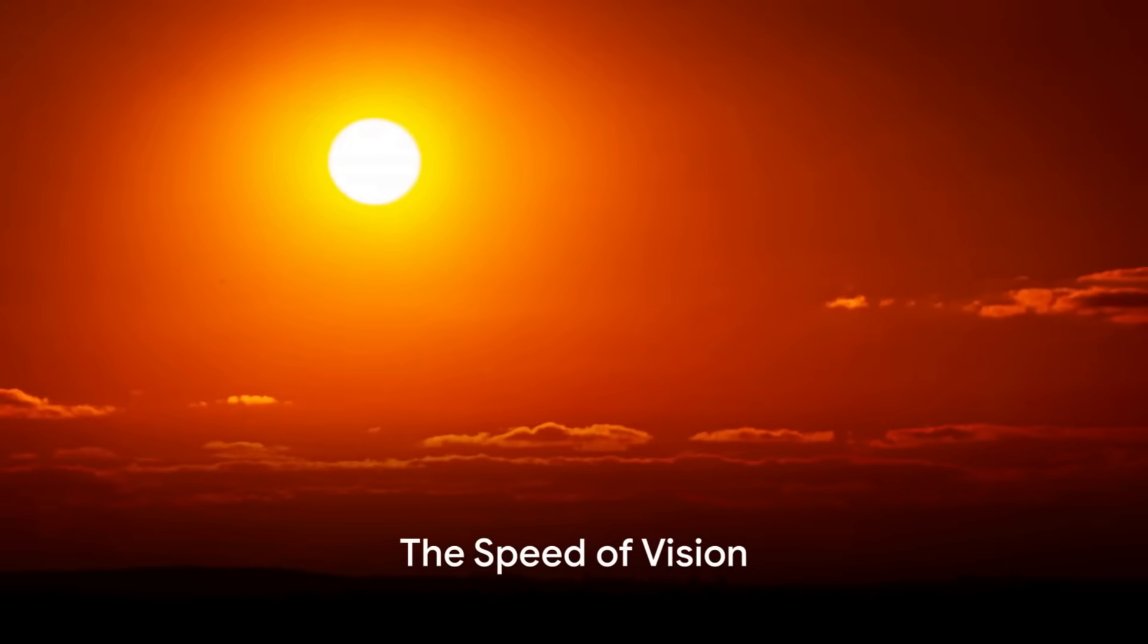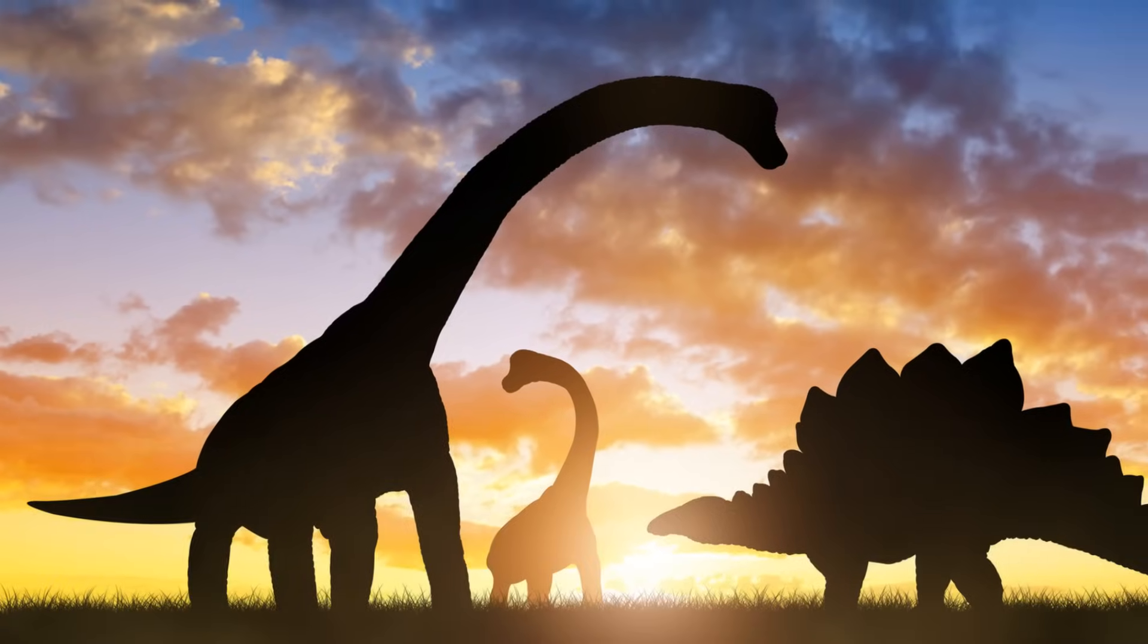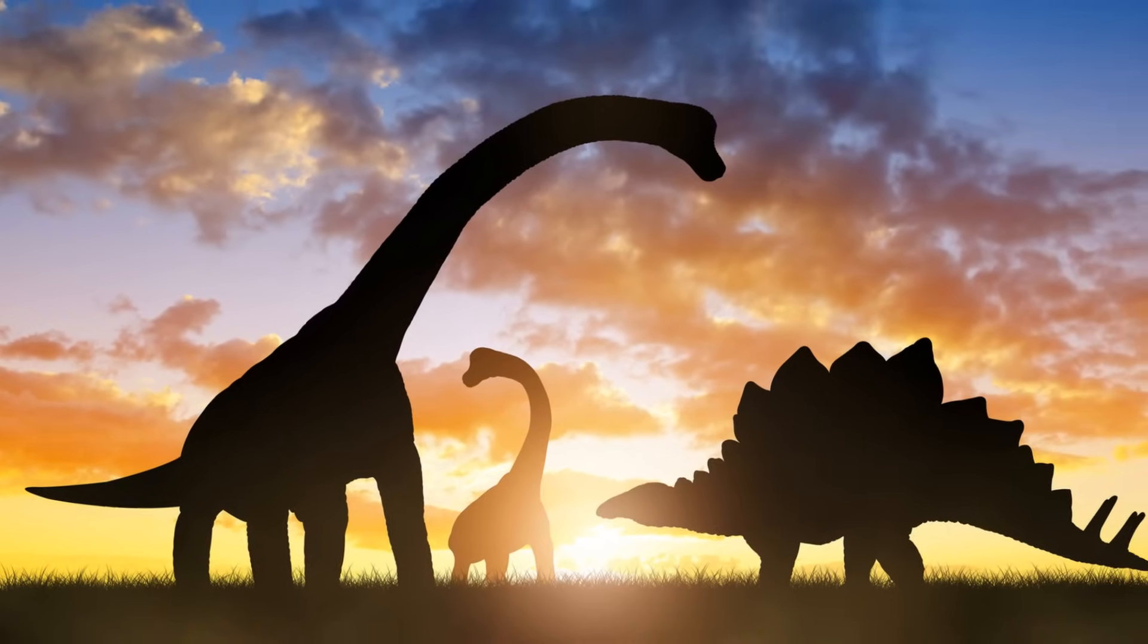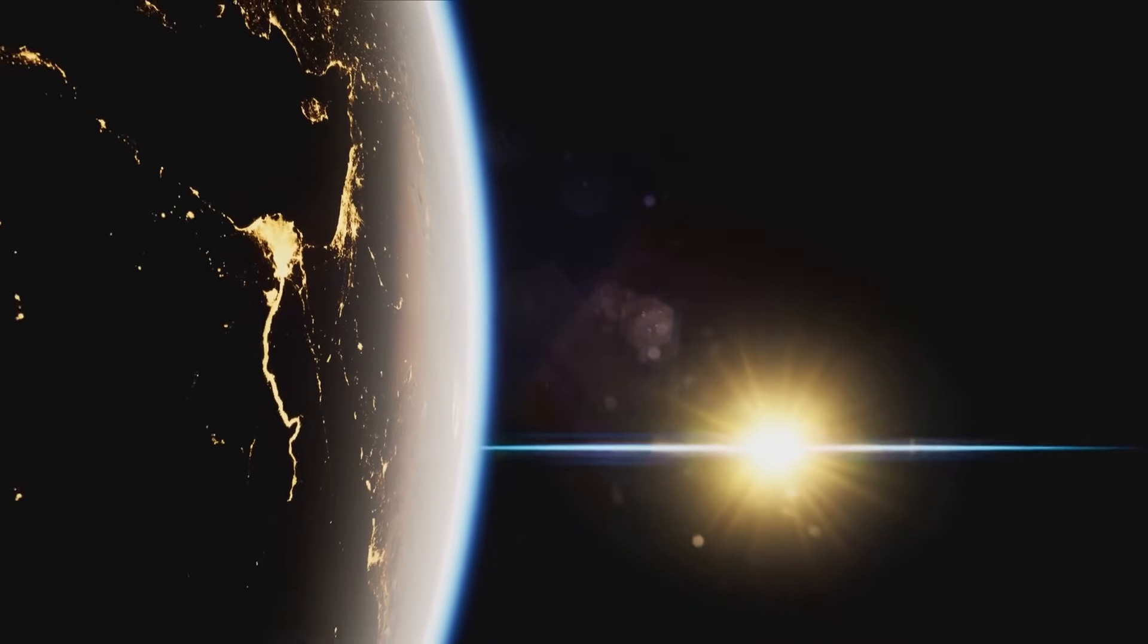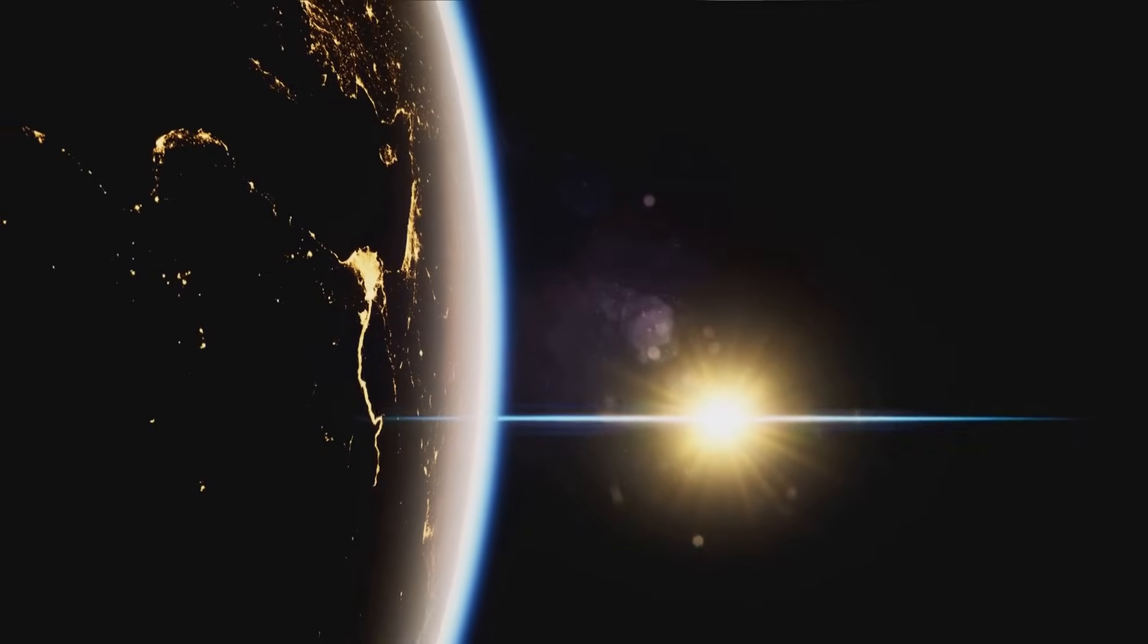Consider, for instance, the moment of sunset. Even as the sun dips below the horizon, we can still discern its shape. This isn't because the sun is still there, but because the light it emitted before setting is still reaching our eyes.